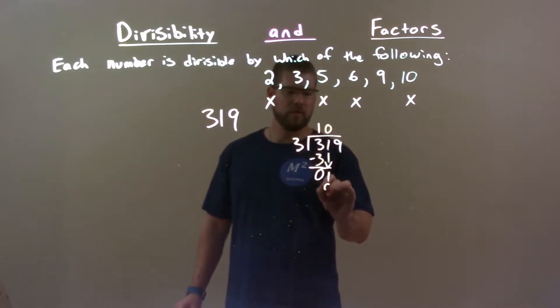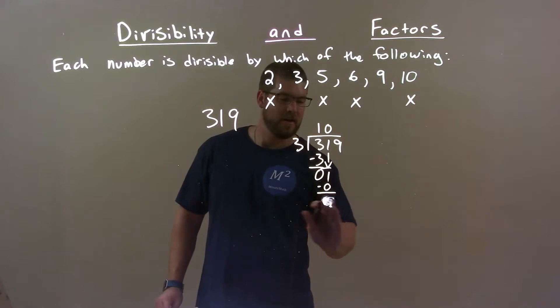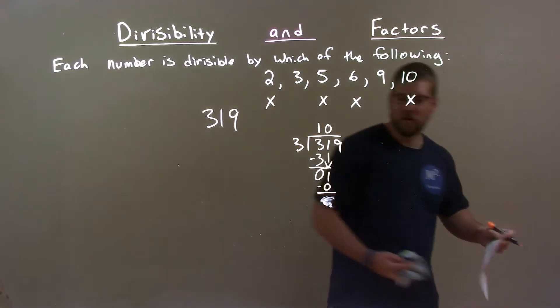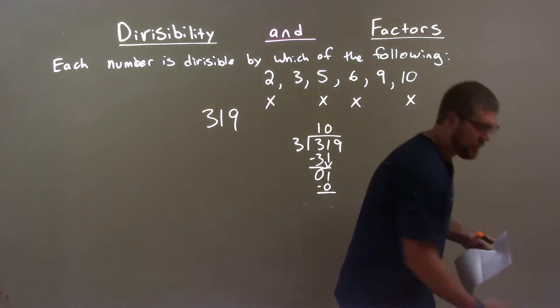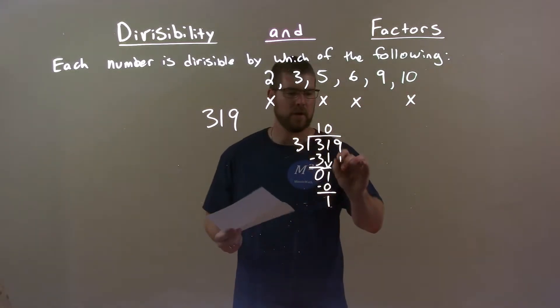No. 0 times 3 is 0. Subtract, and we get a 1 now. Bring down the 9.